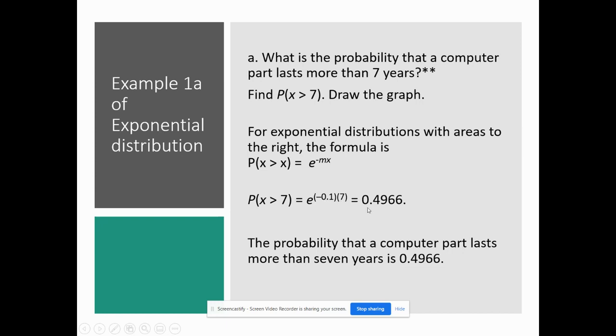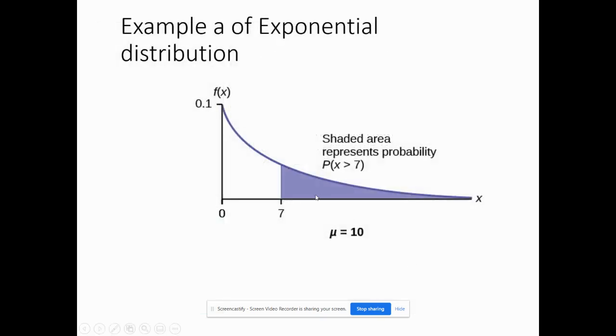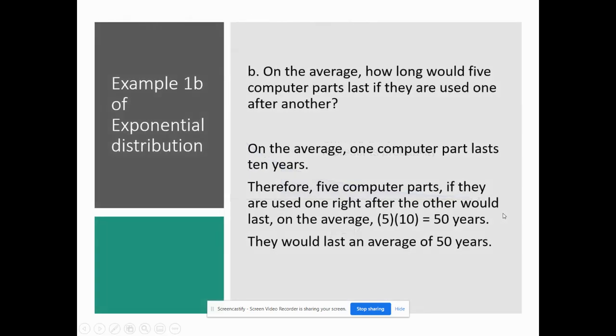So if I put this in my calculator, I get 0.4966. So the probability that a computer part lasts more than 7 years is 0.4966, or roughly almost 50%. And that's what the graph looks at, because I'm looking here for the purple from this area to the right.